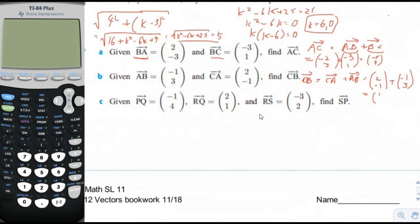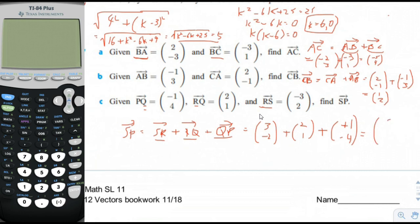Last one. Find SP, given these three. So we can have SR plus RQ plus QP. Let's see. SR. Do we have an SR? No, but we have RS. So we can just reverse that. Do we have an RQ? Yeah, we have exactly RQ. So we just copy that down. And then QP. Do we have QP? No, but we have the opposite. So we just reverse that. Positive 1 over negative 4. Now we just add up all the X components, which would give us 6. Add up all the Y components, which gives us negative 5. 6, negative 5. And we're done with page 10.